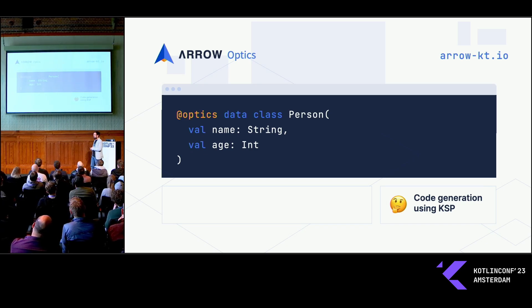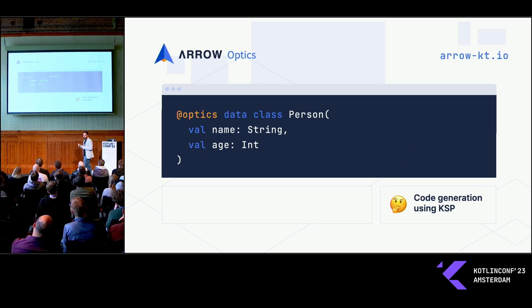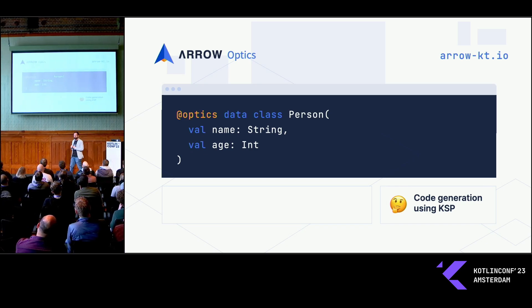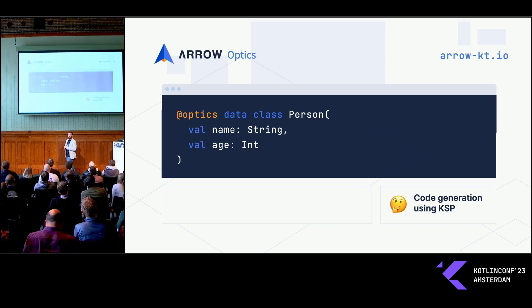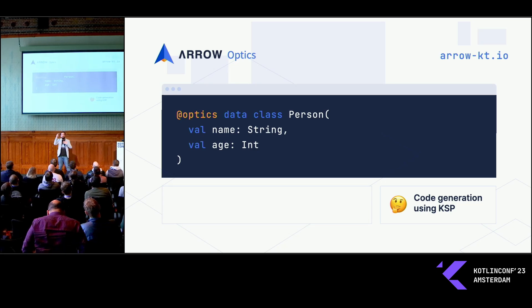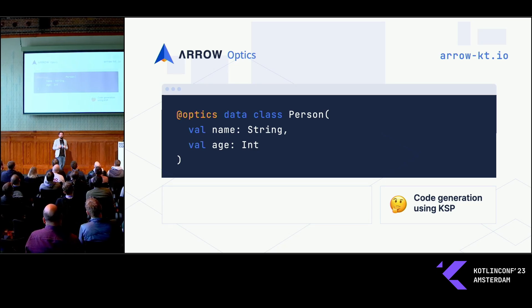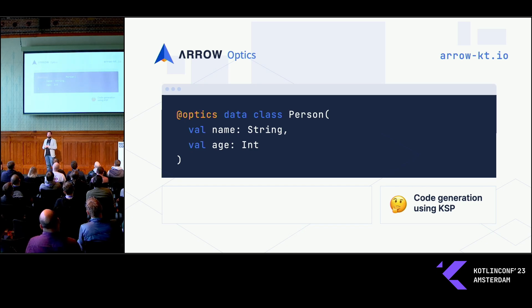It looks a bit like this: you have a data class, you have name and age, and then you put this @optic annotation. Then all these field references are generated for you, and you can use them within this framework to manipulate things.